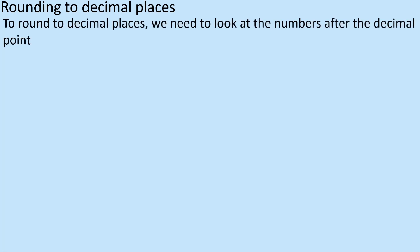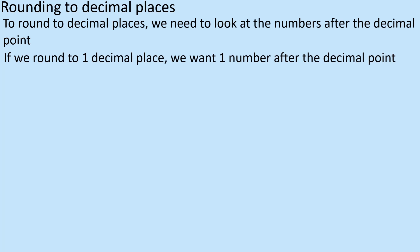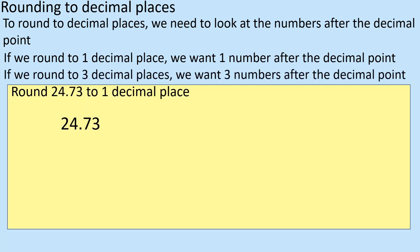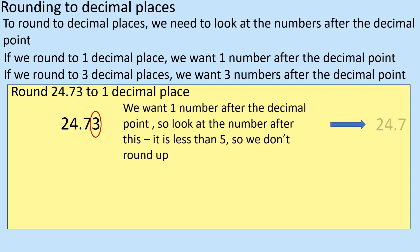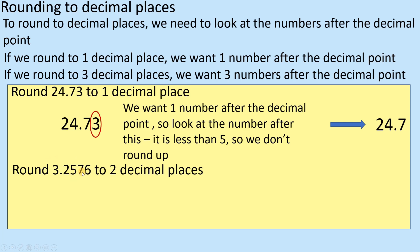What about decimal places? When rounding to decimal places, we need to look at the numbers after the decimal point. So with 24.73, we're looking at the 7 — that's the first decimal place — and then the one after it, which is a 3. So that means it's going to stay as a 7, giving us 24.7. And when we're looking at two decimal places, looking at the 5, the number after it is a 7, so the 2 in 3.25 is going to move up to a 6 — giving us 3.26.